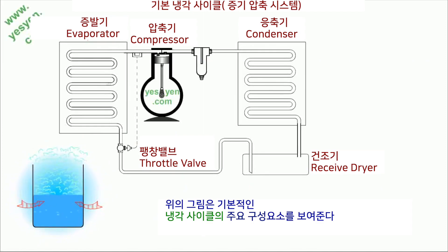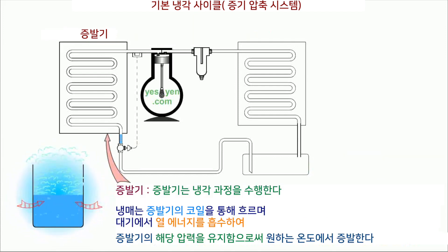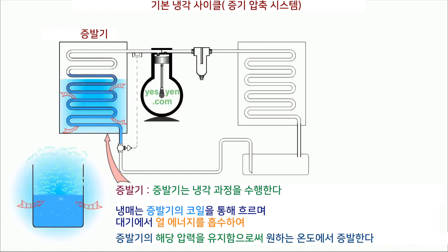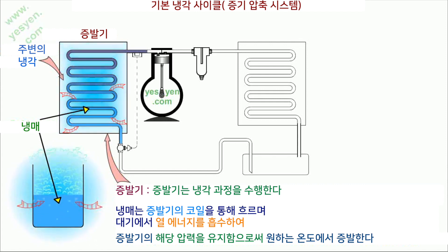The above figure shows the primary components of a basic refrigeration cycle. Evaporator: The evaporator performs the cooling process. The refrigerant flows through coils in the evaporator and vaporizes at the desired temperature by maintaining the corresponding pressure in the evaporator, taking heat energy from the atmosphere, thus cooling the surroundings.